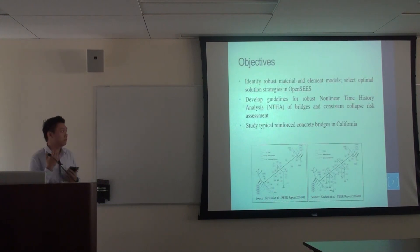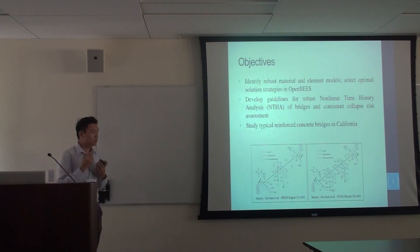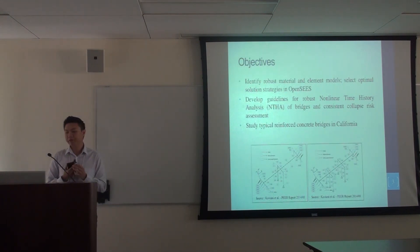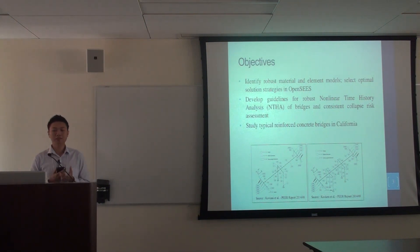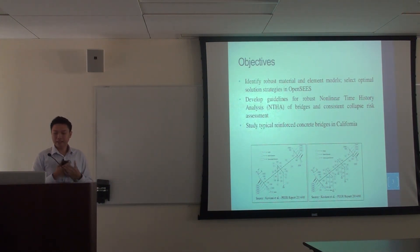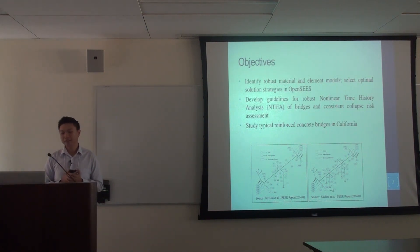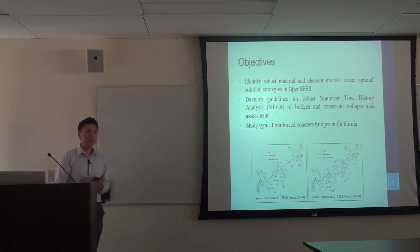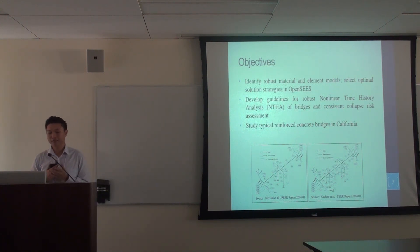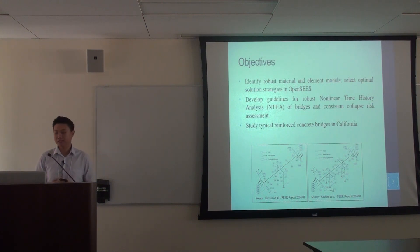The objective of our project is to identify robust material and element models and select optimal solution strategies, and then develop guidelines for robust nonlinear time history analysis of bridges and consistent collapse risk assessment. We focused our study on the typical reinforced concrete bridges in California.